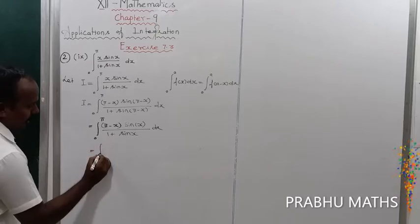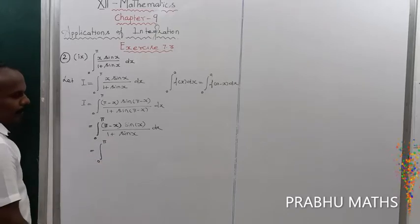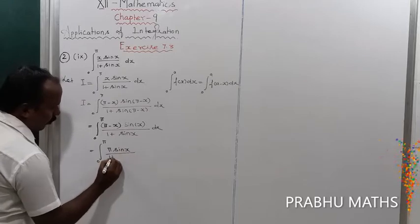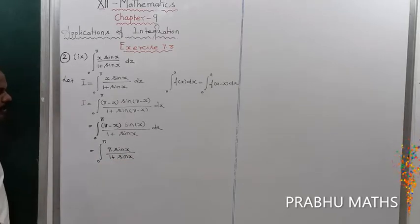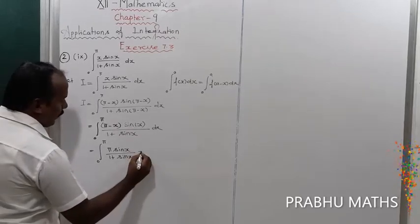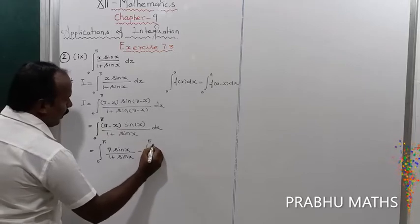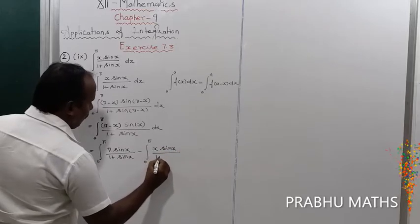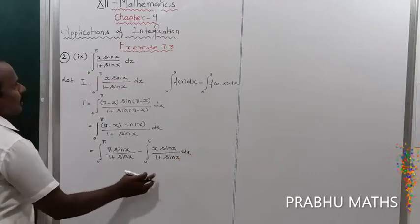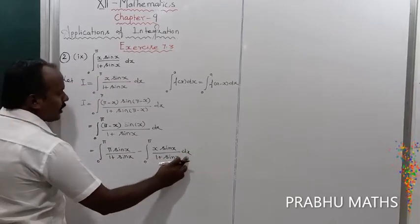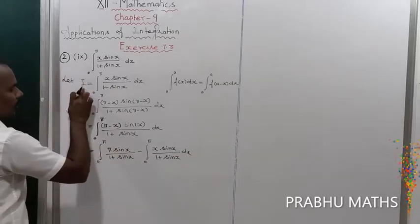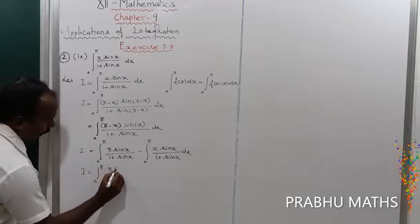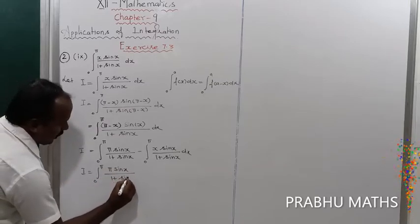So I equals integral from 0 to π of (π minus x) times sin x divided by 1 plus sin x dx. Expanding, the first term is π times sin x divided by 1 plus sin x, and the second term is minus x times sin x divided by 1 plus sin x dx.